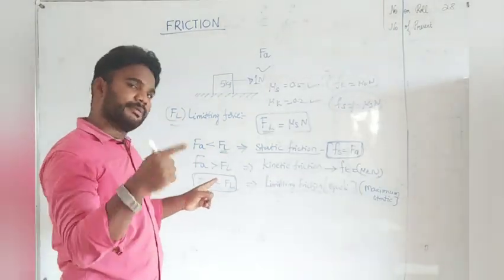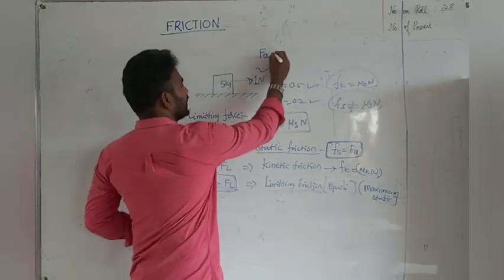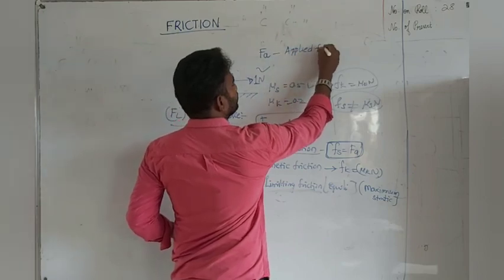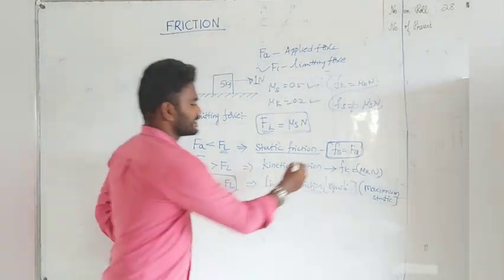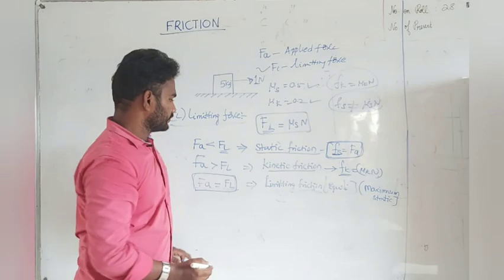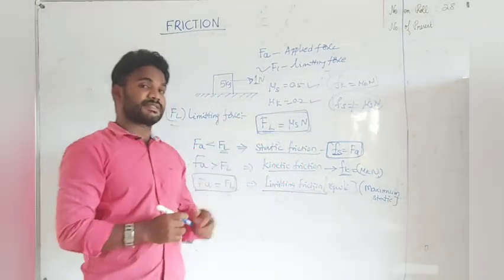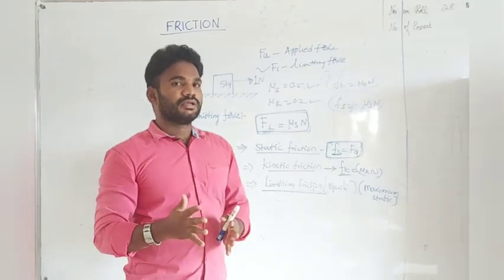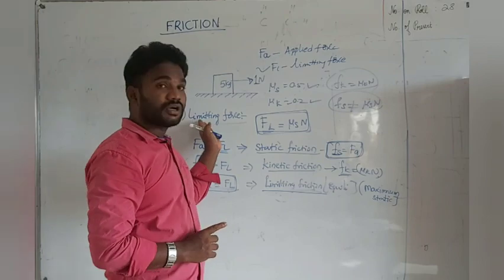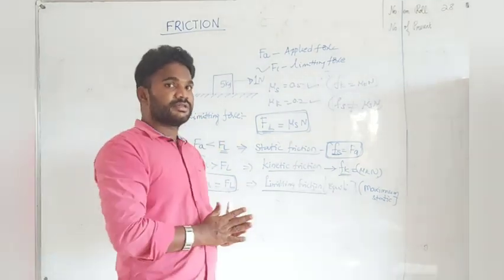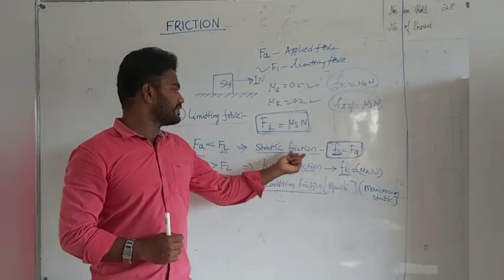To recap: FA is the applied force, FL is the limiting force, FS is static friction, FK is kinetic friction. Limiting friction FL equals μs into normal force, which is also the maximum static friction. If they ask the minimum force required to push an object, that is the limiting force. If applied force equals FL, that is maximum static friction or limiting friction — equilibrium state. Applied force less than FL means static friction; greater than FL means kinetic friction.